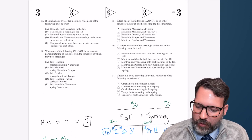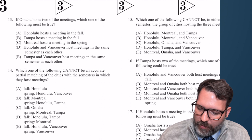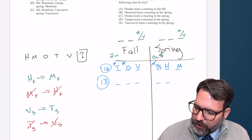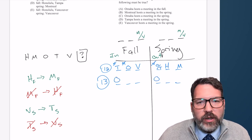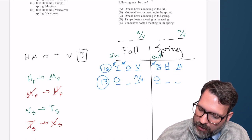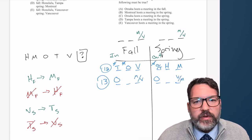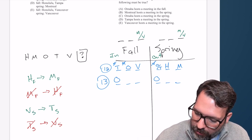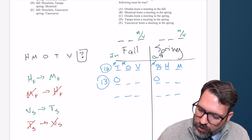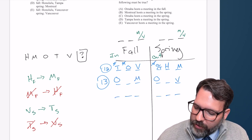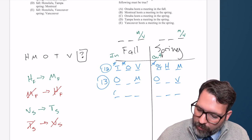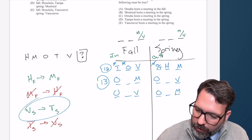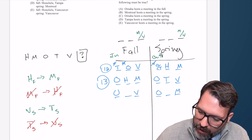Number 13: if Omaha hosts two of the meetings, which one of the following must be true? Omaha is going to be the one element that goes twice. That means we have a coin flip between M and V, since no other element can go twice once one element already has. I'm going to try this as two scenarios: one with M in the fall and V in the spring, another with V in the fall and M in the spring. If V is in the spring, T is in the spring — so in that scenario it's H and M in the fall.